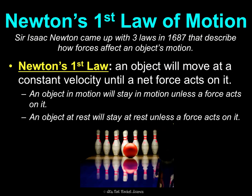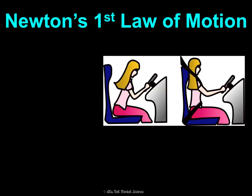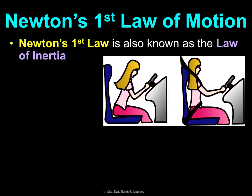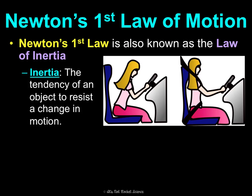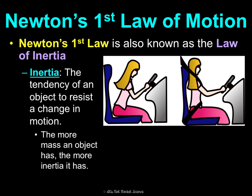Newton's first law is also known as the law of inertia, so it's important to know what inertia is. Inertia is the tendency of an object to resist a change in motion. The more mass an object has, the more inertia it has. For example, it would be a lot easier to knock over a kindergartner than an NFL linebacker, because the linebacker has more mass and therefore more inertia — they resist a change in motion more.